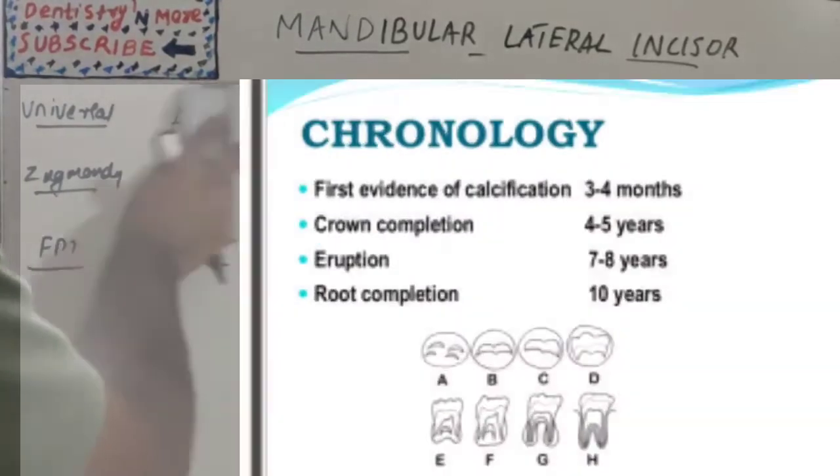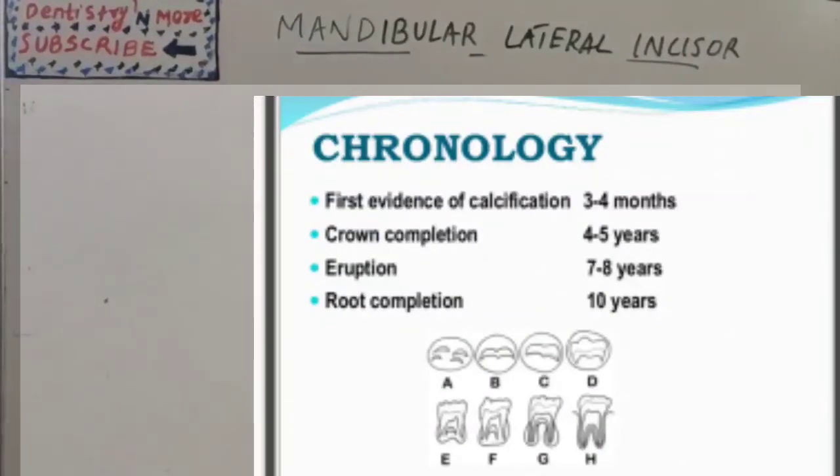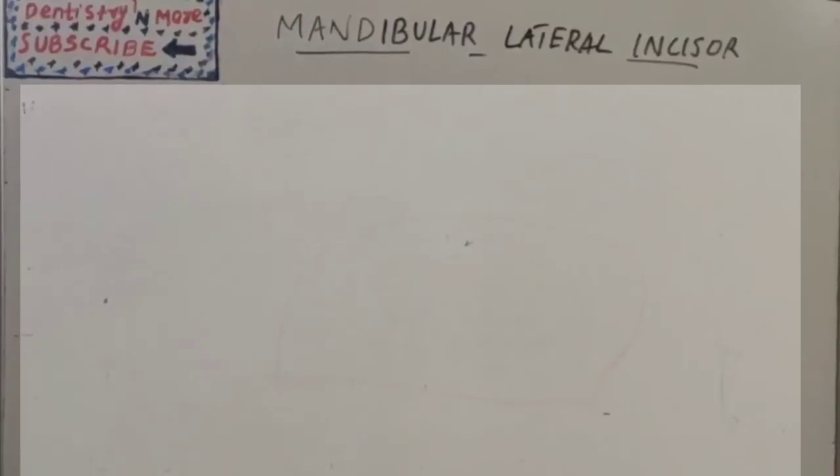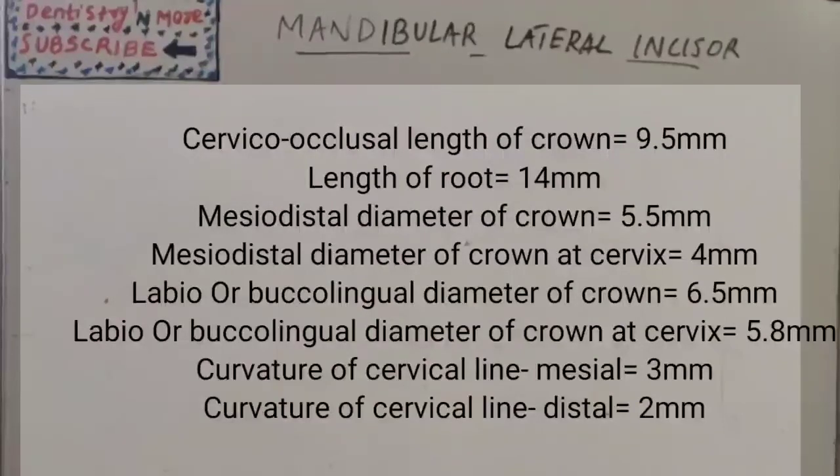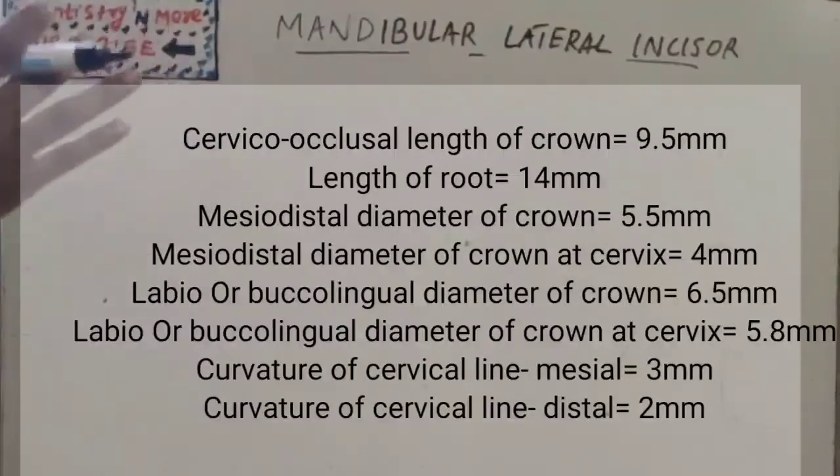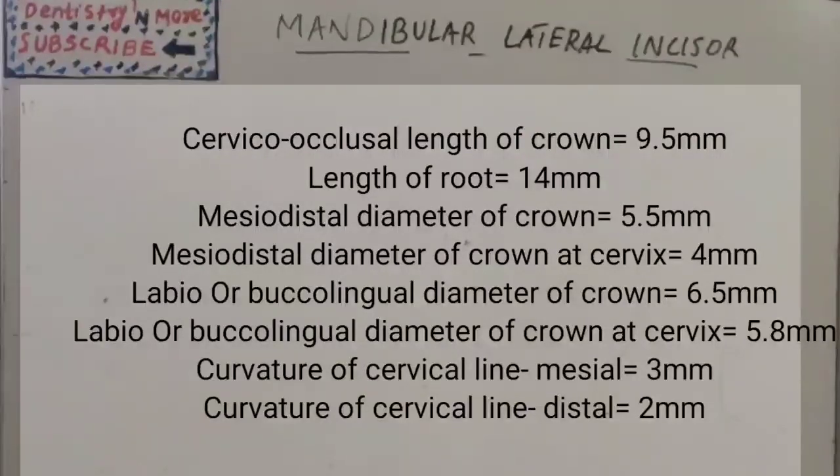The chronology: first evidence of calcification is 3 to 4 months, crown completion by 4 to 5 years, eruption by 7 to 8 years, and root completion by 10 years. Dimensions: 9.5 and 14 for crown and root, 5.5 and 4 for the mesiodistal at crown and cervix. The labiolingual is 6.5 and 5.8 at crown and cervix, and the curvature line is 3 and 2 on mesial and distal side.